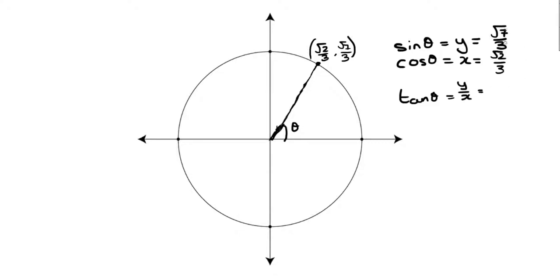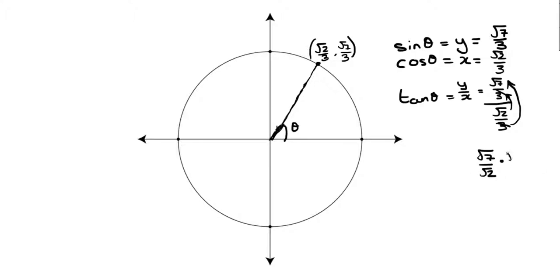Tangent equals root 7 over 3 divided by root 2 over 3. Using our little trick, the 3s cancel out, so this becomes root 7 over root 2. You could either leave it this way or multiply by a conjugate to get rid of the radical underneath, which would give you root 14 over 2. So those are your answers.